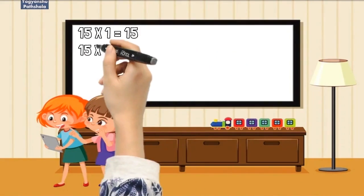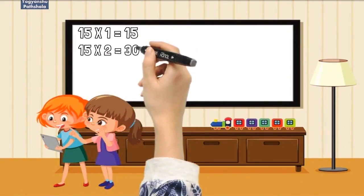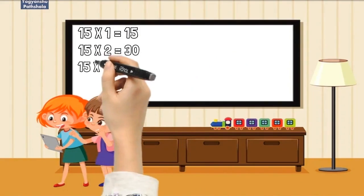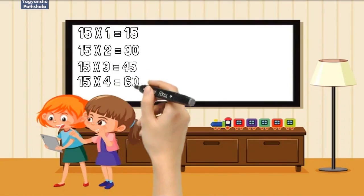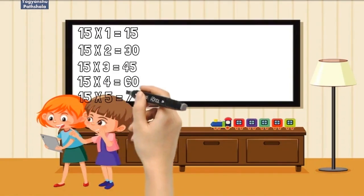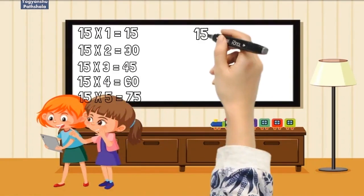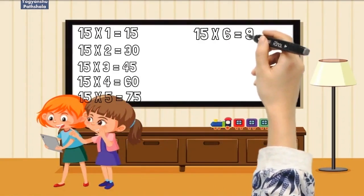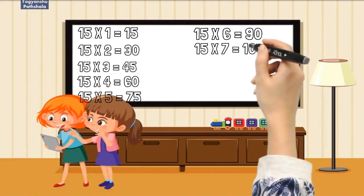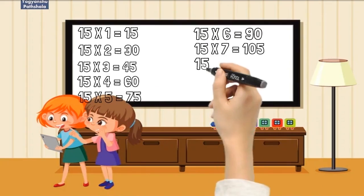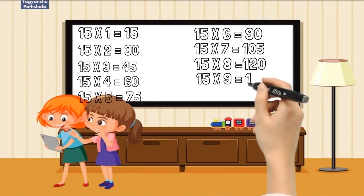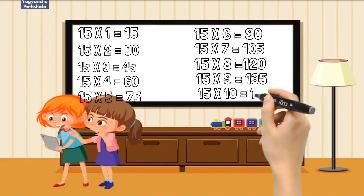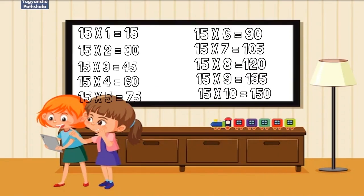15 × 1 = 15. 15 × 2 = 30. 15 × 3 = 45. 15 × 4 = 60. 15 × 5 = 75. 15 × 6 = 90. 15 × 7 = 105. 15 × 8 = 120. 15 × 9 = 135. 15 × 10 = 150.